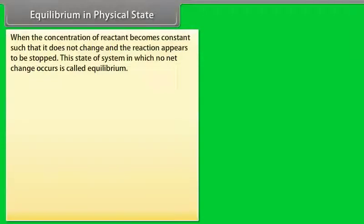Equilibrium in Physical State: When the concentration of a reactant becomes constant such that it does not change and the reaction appears to have stopped, the state of a system in which no net change occurs is called Equilibrium.